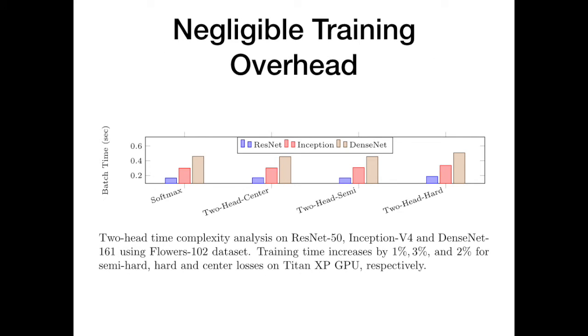It is great to boost classification and bring retrieval to standard architectures, but how much does that cost? Our proposal adds a single fully connected layer to standard architecture. The network training time increases by approximately 2%. We hope this marginal cost will promote adoption of the proposed two-head architecture.